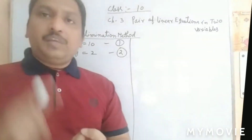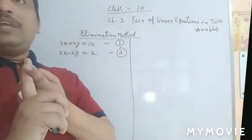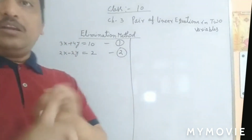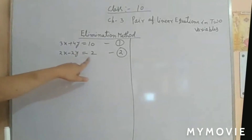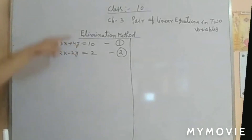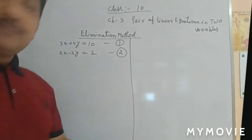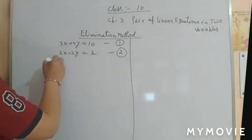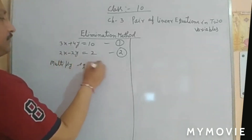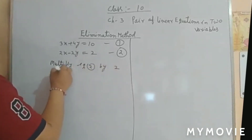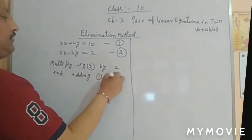To eliminate a variable, we first make the coefficient of one variable equal in both equations, then either add or subtract as per the sign. Here, if we multiply equation 2 by 2 and add equations 1 and 2, we get +4y and −4y which cancel out. So we multiply equation 2 by 2 and add equations 1 and 2.